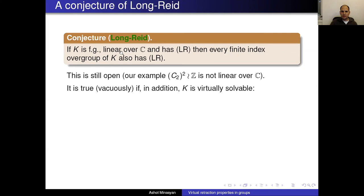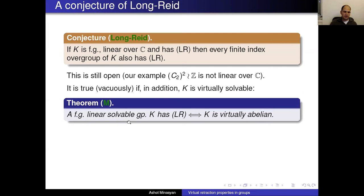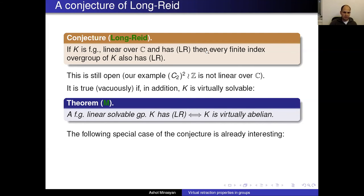For linear groups, the Tits alternative says every finitely generated subgroup is either virtually solvable or contains a free subgroup. For finitely generated linear solvable groups, one can show that K has LR if and only if it is virtually abelian. So for linear solvable groups, the conjecture holds but somewhat vacuously — all polycyclic groups are linear, giving another proof of the same statement.